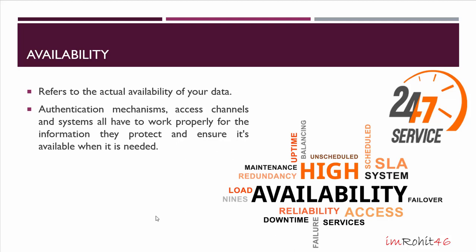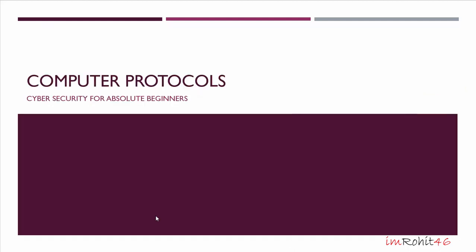Let's look at availability. Availability refers to the actual availability of data — that means data and information systems are available when required. Hardware maintenance, software patching or upgrading, and network optimization ensures availability.